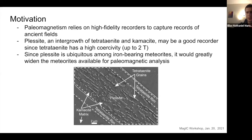Plessite is ubiquitous in iron-bearing meteorites and therefore would widen the meteorites available for paleomagnetic analysis, beyond those able to be studied using cloudy zones. In this project we looked at the ungrouped iron meteorite Bocuribito.